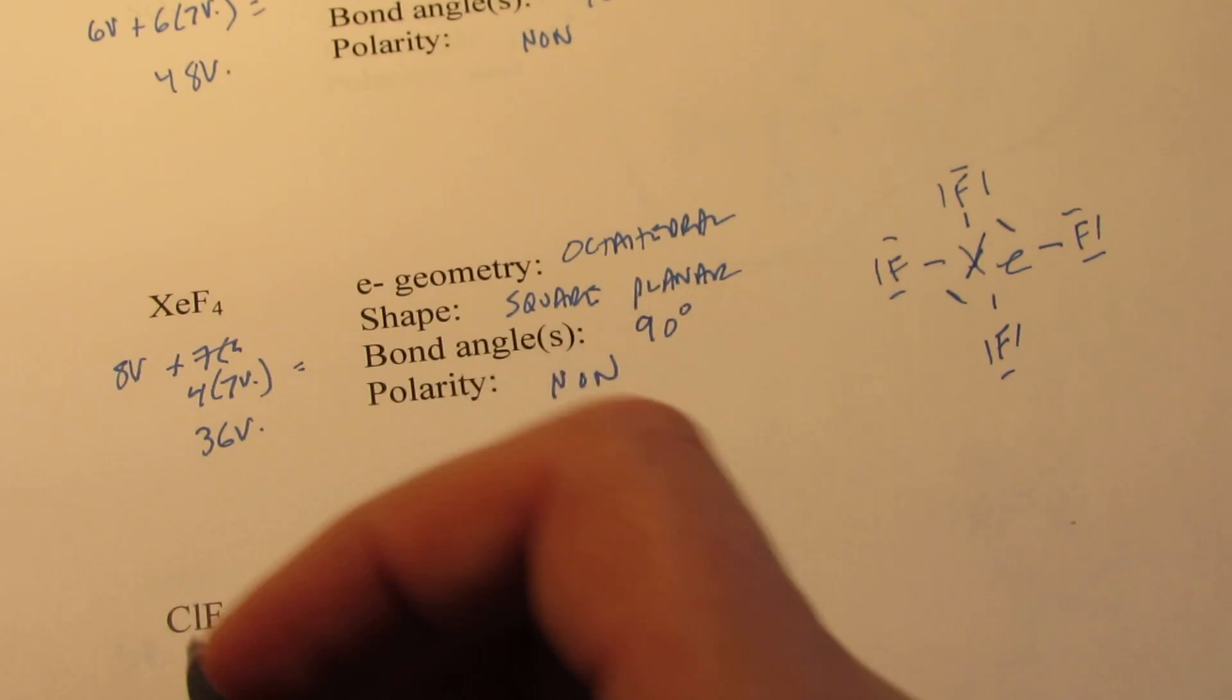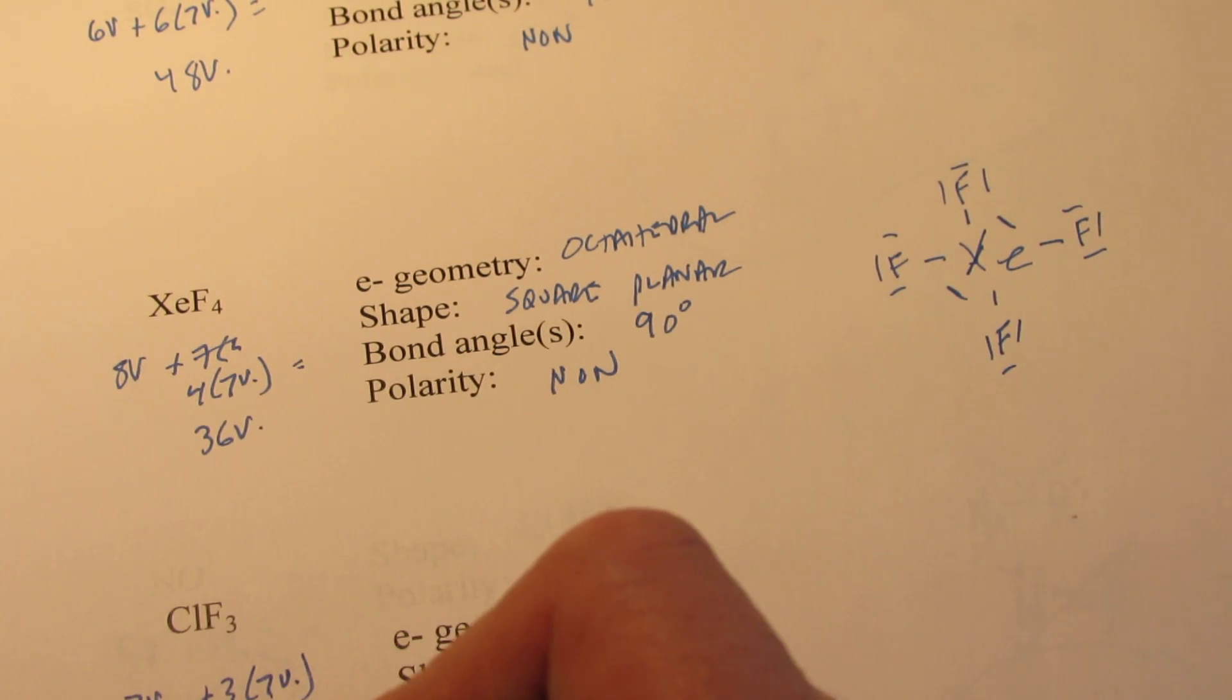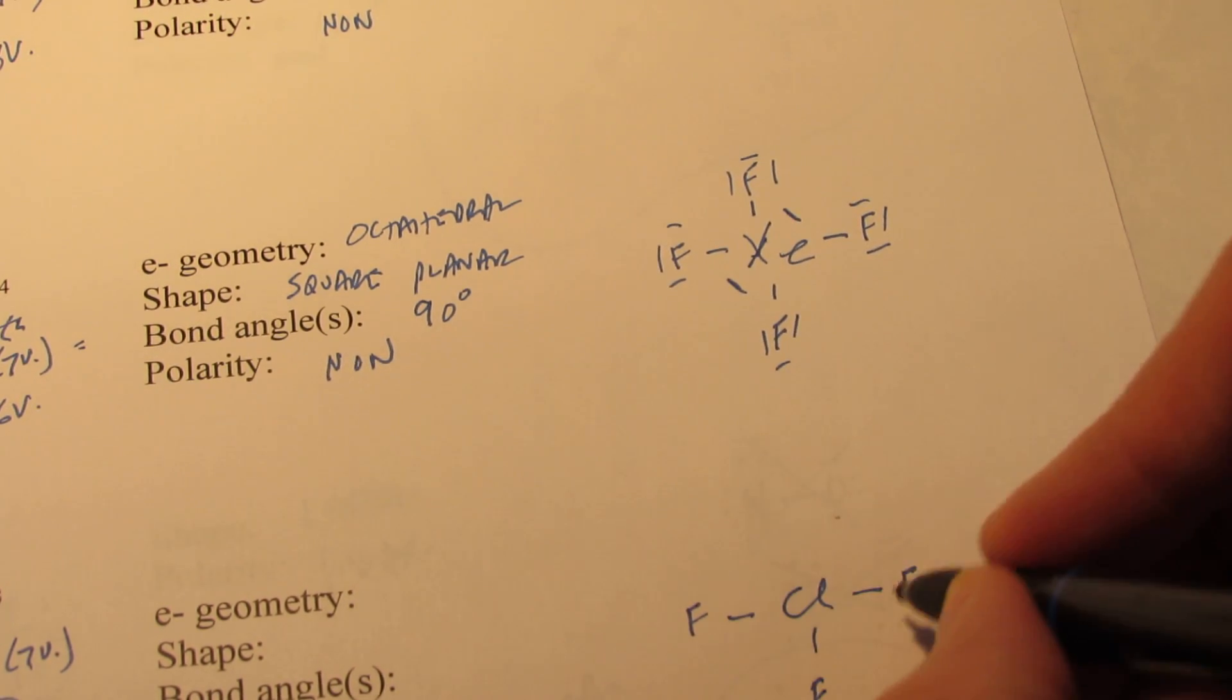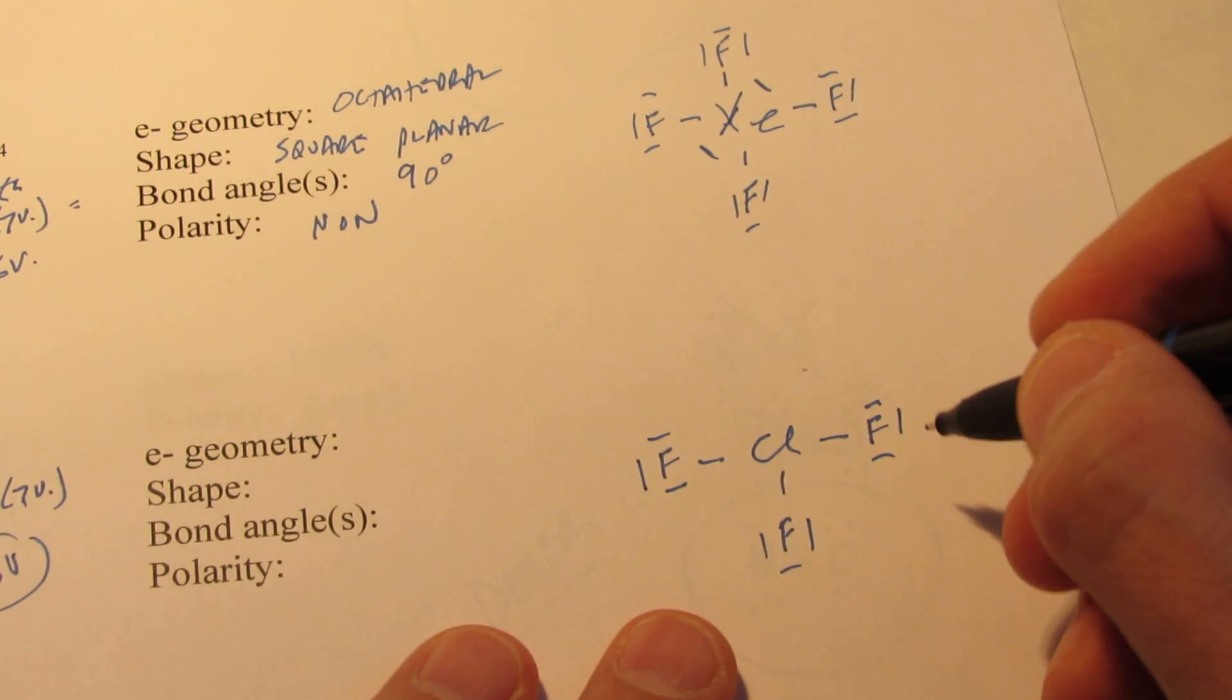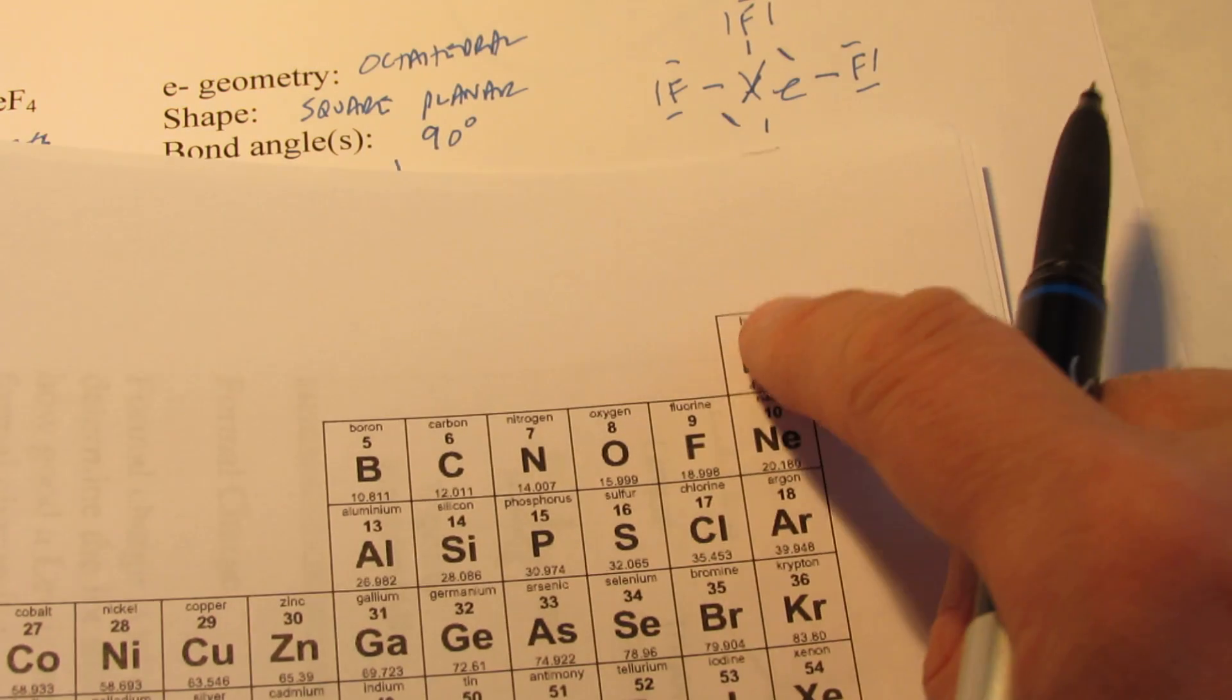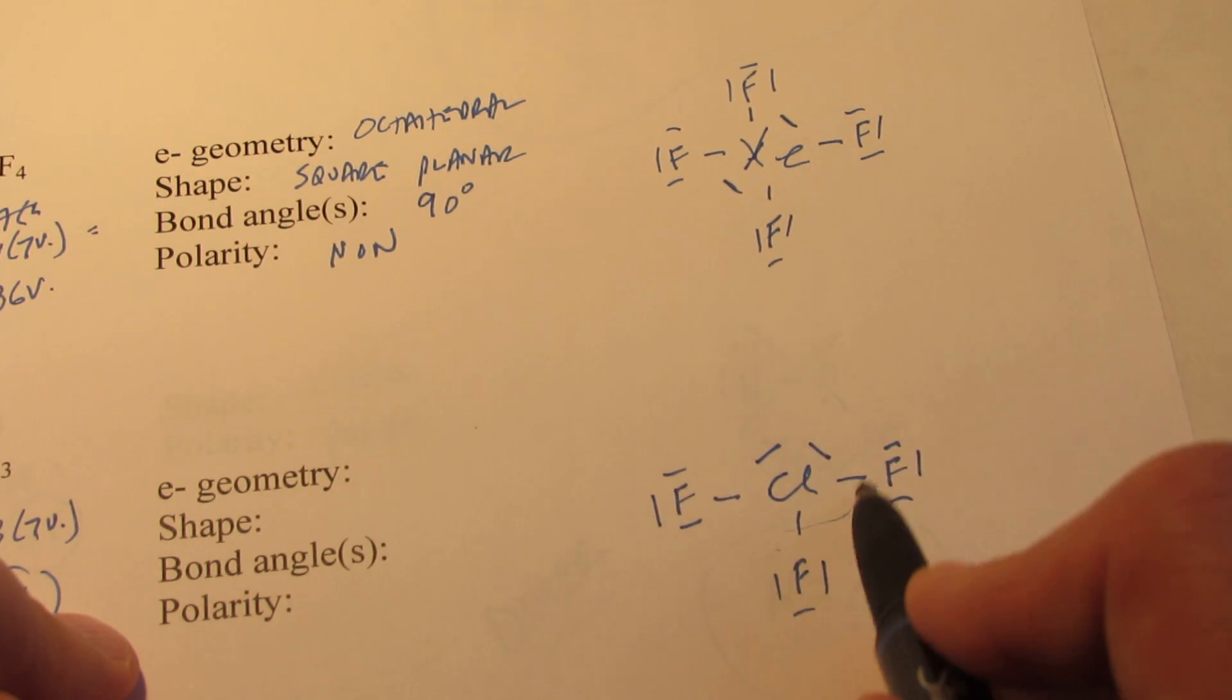Okay? Do ClF3. Chlorine has seven. Each fluorine has seven. So we have 21 plus seven, I believe. That's 28 valence. So we'll put our chlorine in the center. We'll put a fluorine on each side. We'll put one down below. Give each fluorine a full octet. That's 24, 26, and 28. So chlorine has an expanded octet, it looks like, in this arrangement. Does chlorine have at least three energy levels? One, two, oh, it does. So it does have a third, a d-sub level to expand into. So here we have five pair around the central atom.